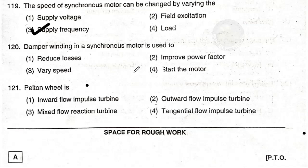The damper winding in a synchronous motor is used to: option 1 reduce losses, option 2 improve power factor, option 3 vary frequency, option 4 start the motor. The answer is option 4 — start the motor. The damper winding in a synchronous motor is used to start the motor.